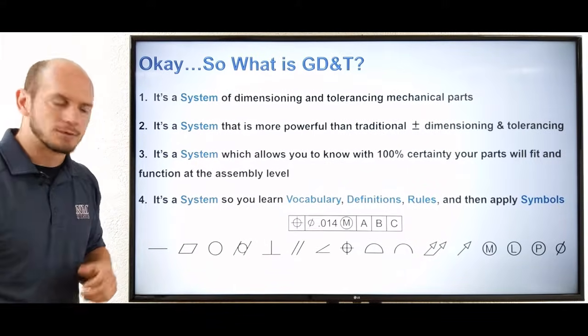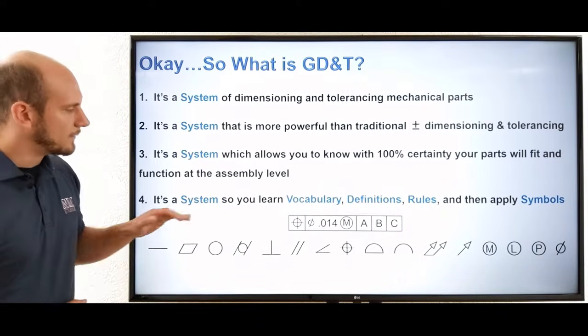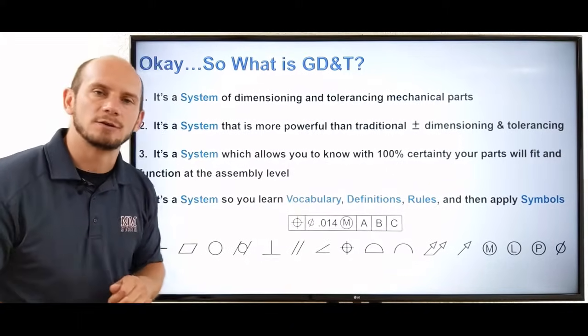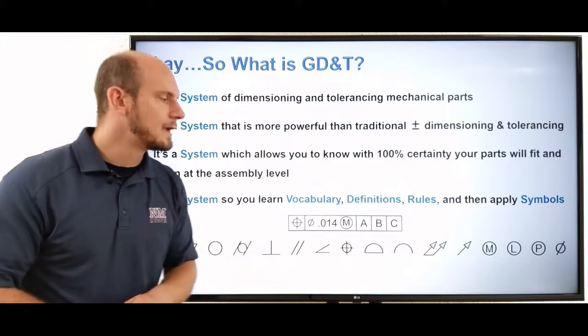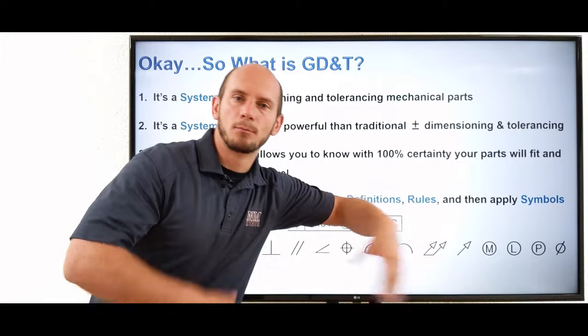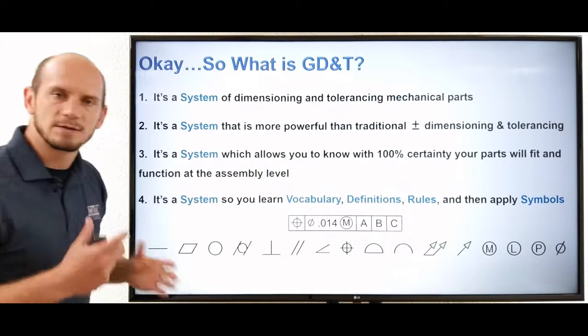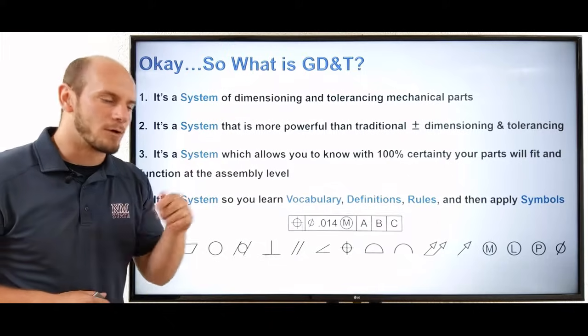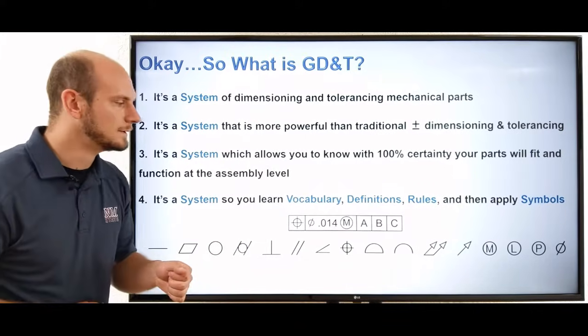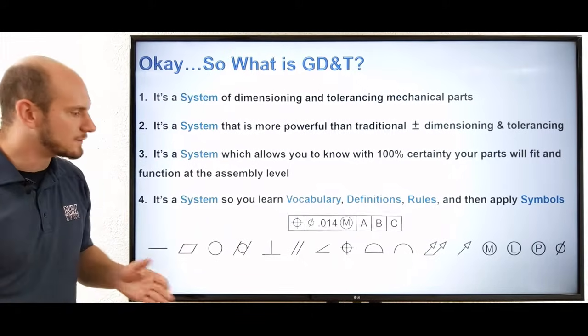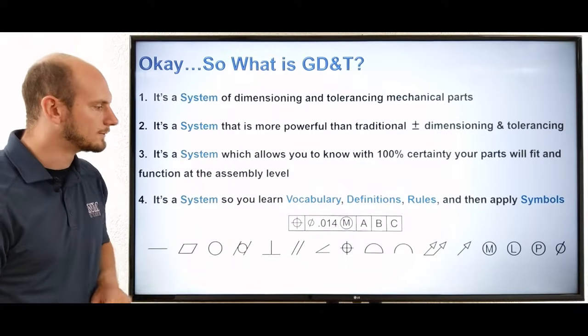Number four, it's a system. So of course with any system, we need to learn some vocabulary, understand some definitions, follow some rules, and then once we do those three things, we can then start to apply symbols, predefined symbols, to the face of our drawing to help start to convey our design intent for our parts and our part features. And these are some typical or common symbols that you'll see within the GD&T world right here.